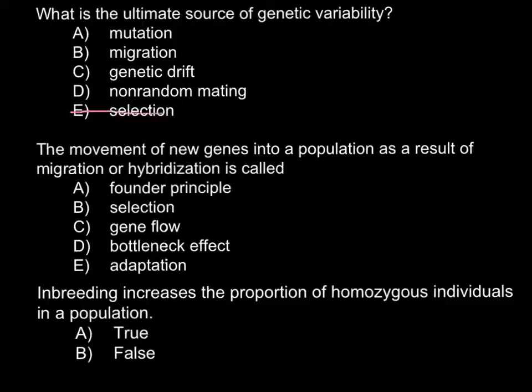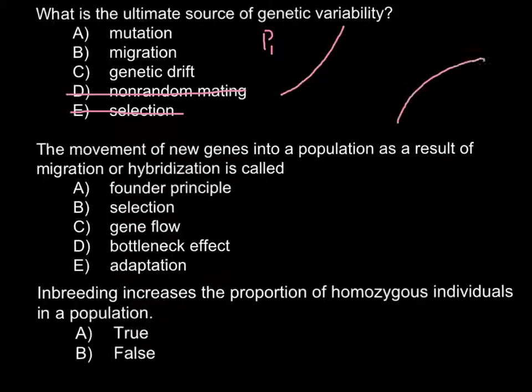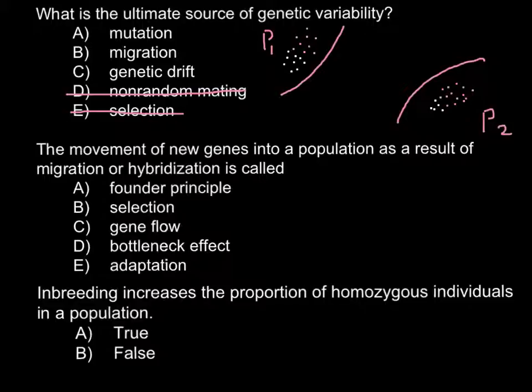Non-random mating is another way of selection, so we cross that out too. Now, genetic drift — imagine we have population one and another population two. In population one we have some ratio of alleles, let's say two kinds of alleles with a fifty-fifty percent ratio. In population two we have a different ratio of the same two alleles, say ten percent white alleles and ninety percent red alleles.